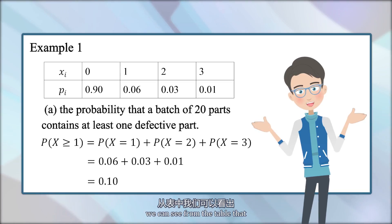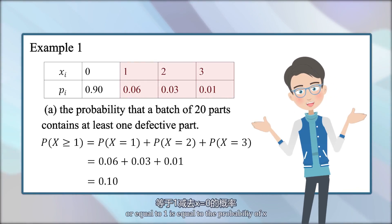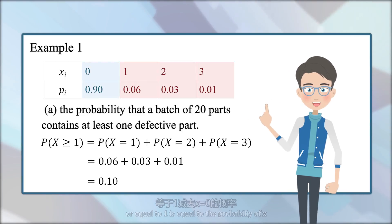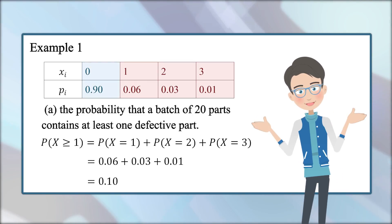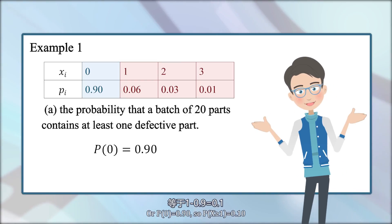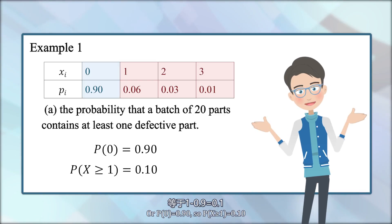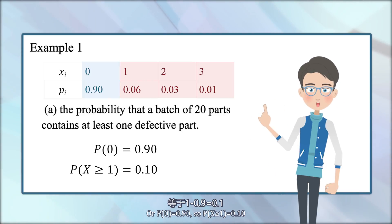On the other hand, we can see from the table that probability of X, which is greater or equal to 1, is equal to the probability of X is not equal to 0. The probability of X equals 0 is 0.9. So probability of X greater than or equal to 1 equals 0.1.